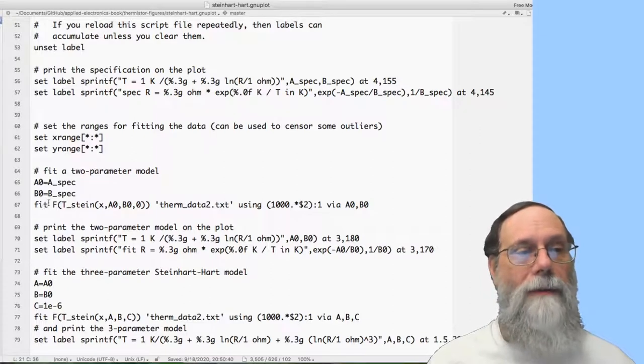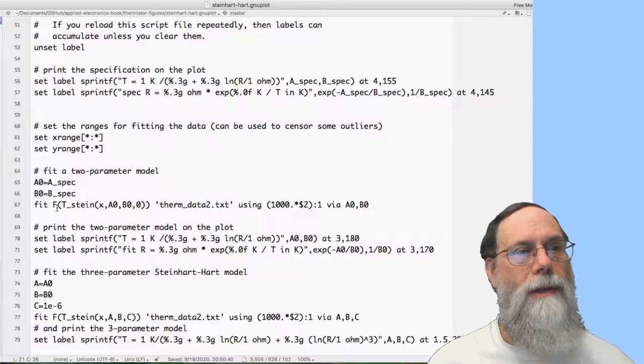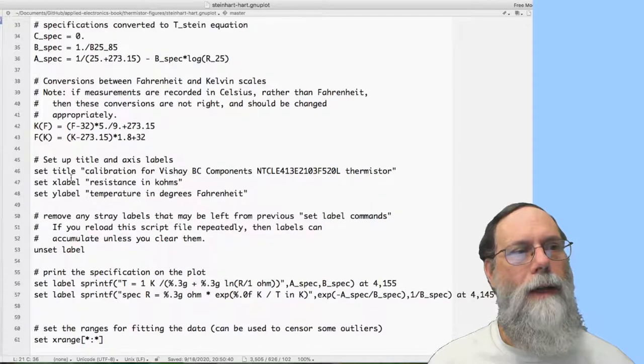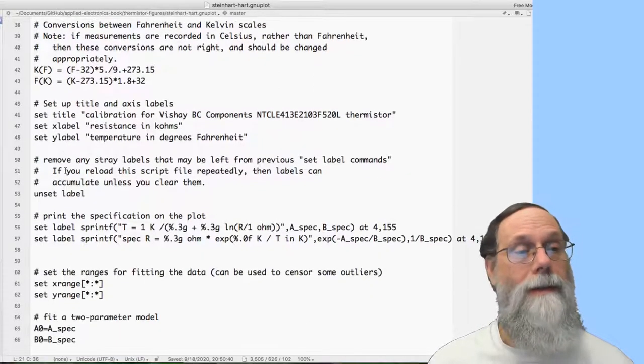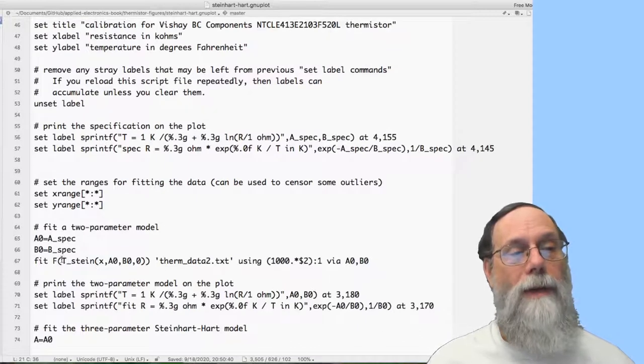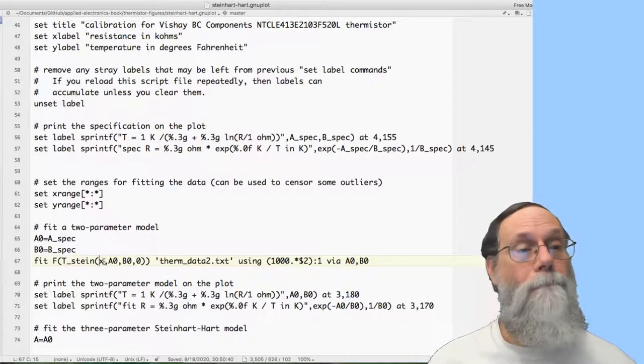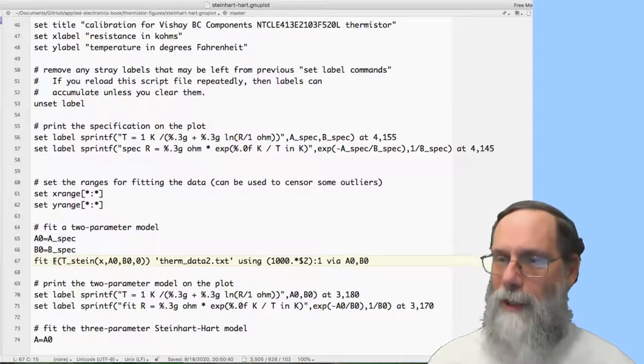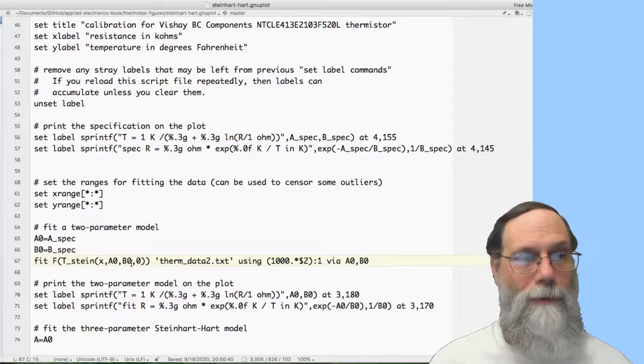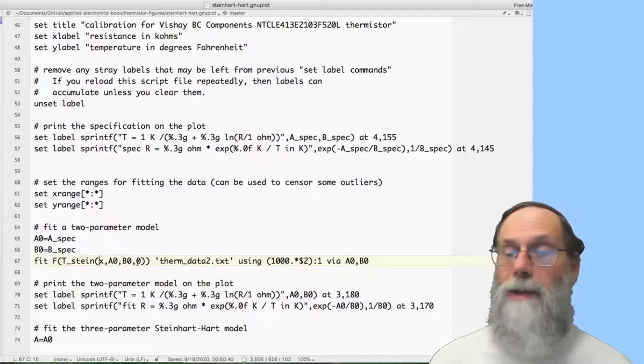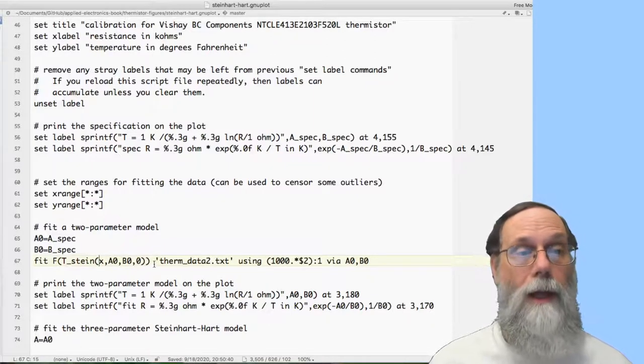And I give a function here, which is f of t stein. Notice the f up here was the convert to Fahrenheit. So we're taking whatever came out of the t stein equation here. And notice that's the x here is what is going to be on the x-axis, and that was supposed to be the resistance. So fit the Steinhardt-Hart equation, but convert it to Fahrenheit. So the y-axis is going to be Fahrenheit. And A0 and B0 are the parameters that are needed for the Steinhardt-Hart model. We're not having a c model. This is just the two-parameter version, so c is zero. Then I have the data, thermdata2.txt.